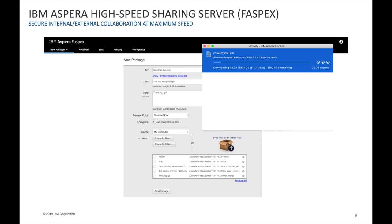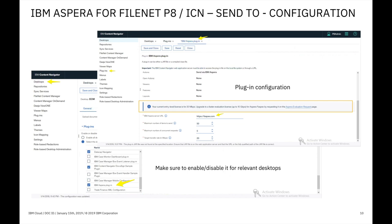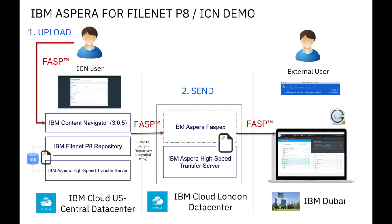This is the IBM Aspera FASPEX server you can leverage with a fully licensed platform, allowing you to both send and receive large files and datasets. Configuring this integration on ICN is very simple — you enable the plugin, point it to your IBM Aspera FASPEX server, define parameters such as the target transfer rate for each session, and then enable it for relevant desktops.